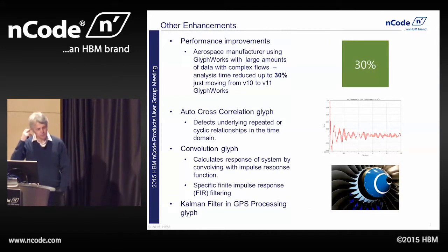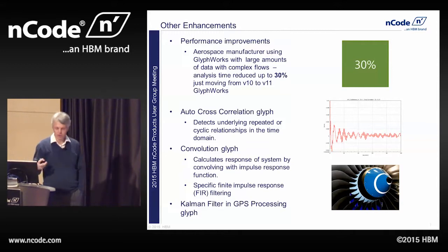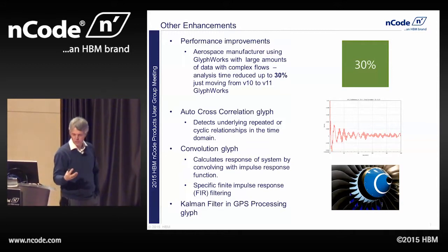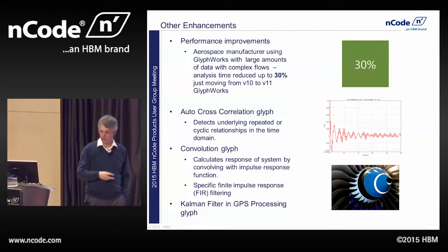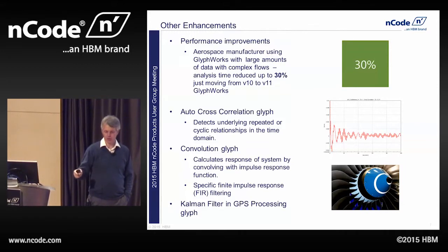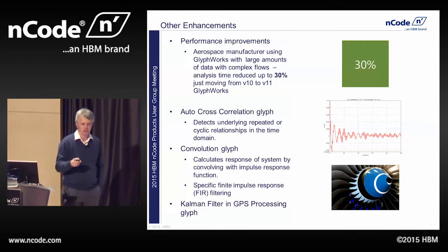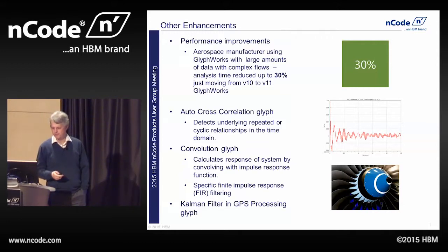We've done some work on performance improvements, looking at speeding up the software in general. For large glyphs in particular, we see up to a 30% improvement in speed between version 7 and version 11. We're continuing to look at bottlenecks in speed to see if we can improve those in the coming years.